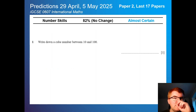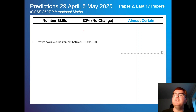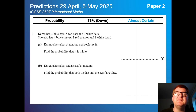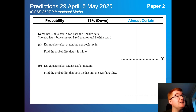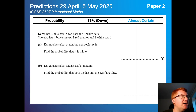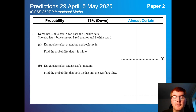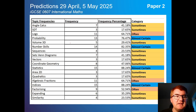Number skills have always been important towards the start of the paper — usually easier questions — knowing your square numbers, prime numbers, and cube numbers. Probability is slightly down at 76%, although this could change with the slightly longer paper 2. Probability has traditionally appeared on calculator papers in both GCSE and IGCSE, but we have no idea how much they'll put in non-calculator style — they certainly could and have done before. So topics like probability, number skills, and indices are important.